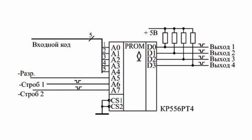But this whole circuit can be replaced with just one ROM chip — for example, the RT4, which has 8 address inputs and 4 data outputs.